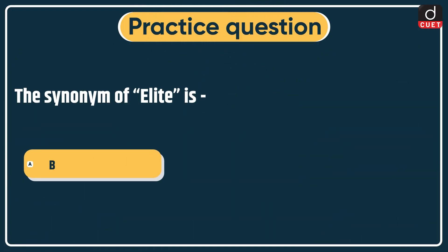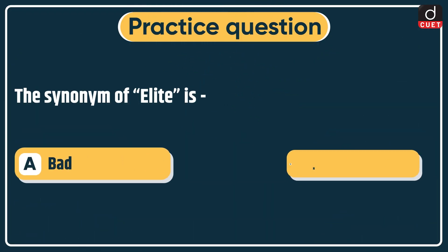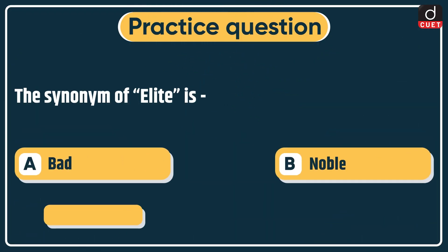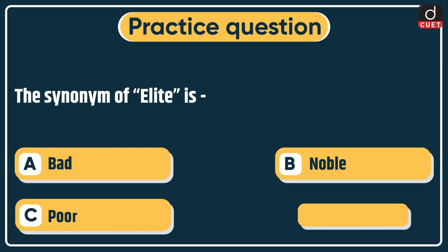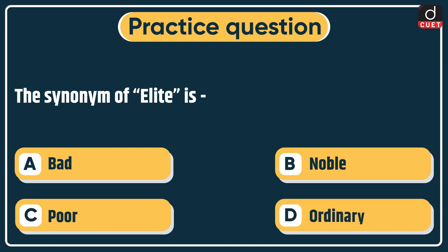Now it's time for the practice question. The synonym of 'elite' is — bad, noble, poor, or ordinary. Send the answer of this question in the comment section. Stay tuned for the next episode. Thanks for watching.